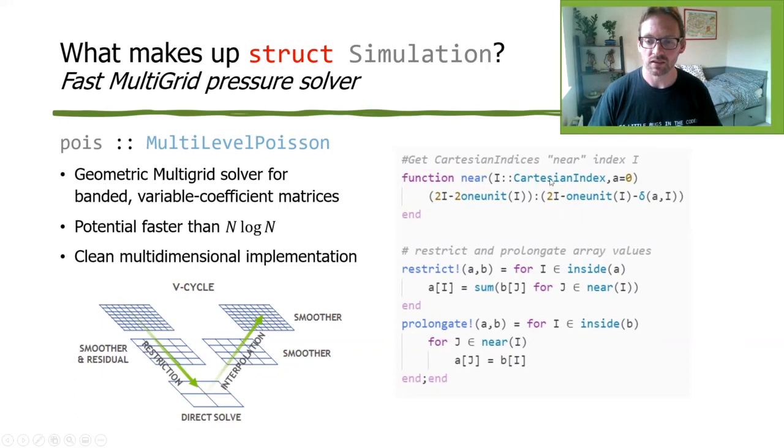So this near function takes a Cartesian index and it returns the range, the Cartesian indices, at the next grid up. And that works again, no matter how many dimensions the grid has, 2D or 3D, you would even work in 1D and 4D. I just don't know what those flows would look like. And then the restrict and prolongate functions, you either just sum all over the points in that range, or you copy to all the points in that range.